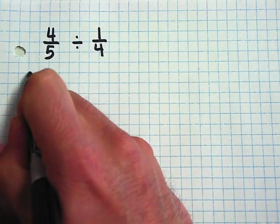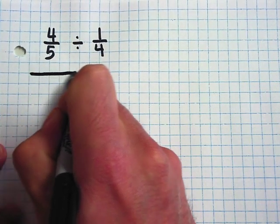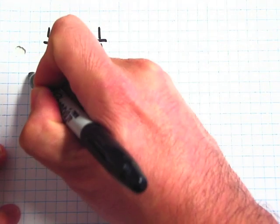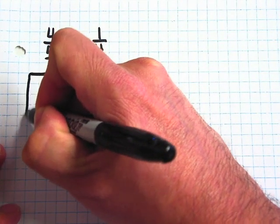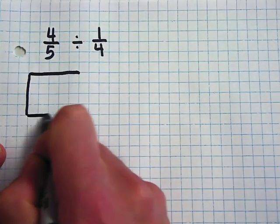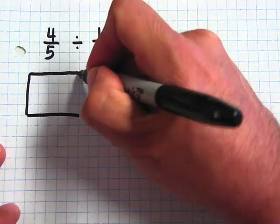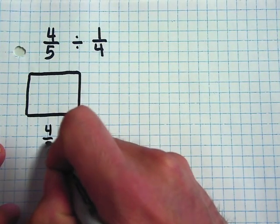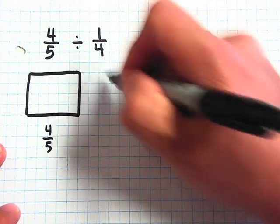I'm going to create an area model based off of the denominators that I have in front of me. So I'm going to make it four by five. If you look carefully, there's five columns for the four-fifths and there's four rows for the one-fourth.